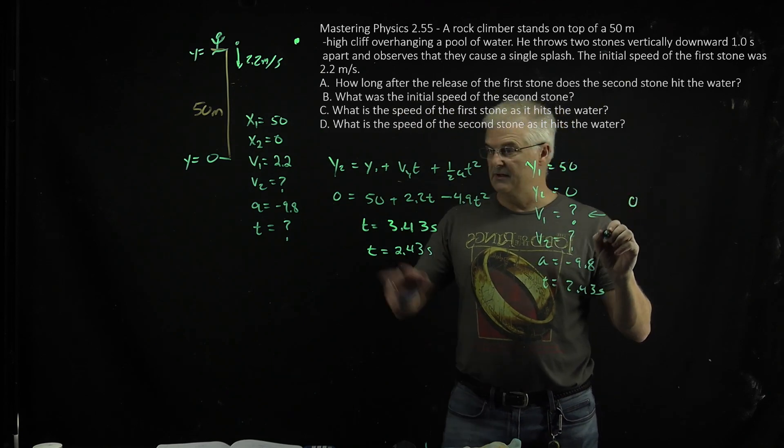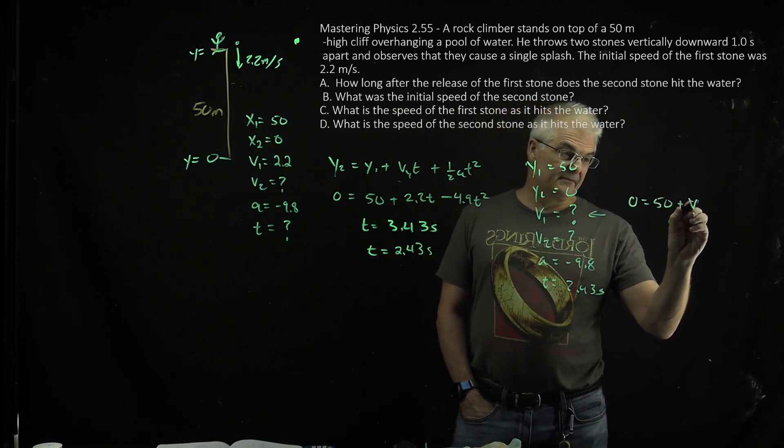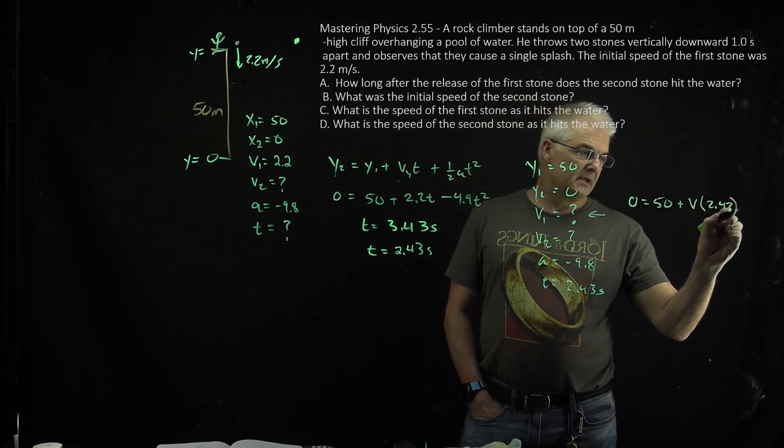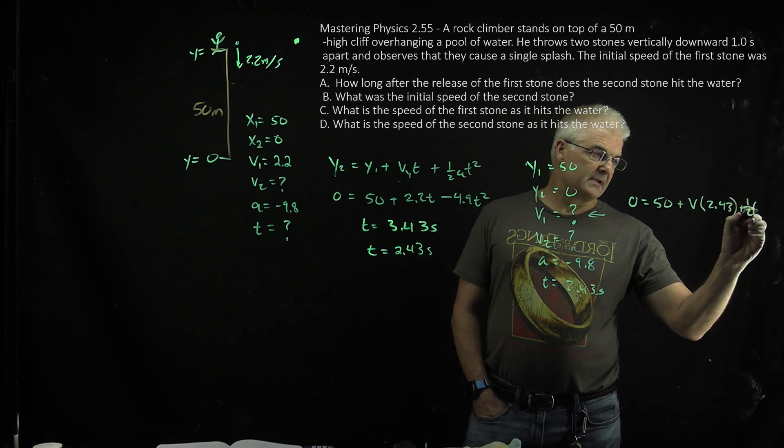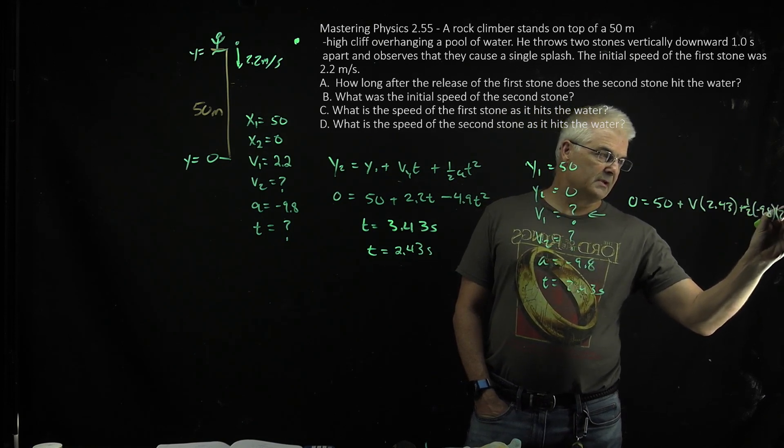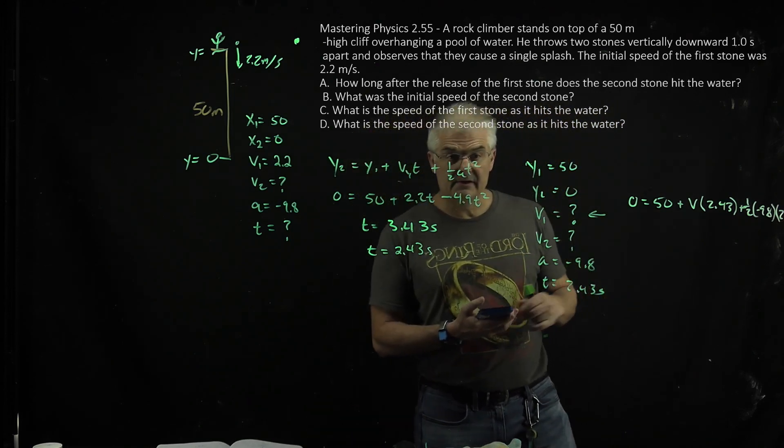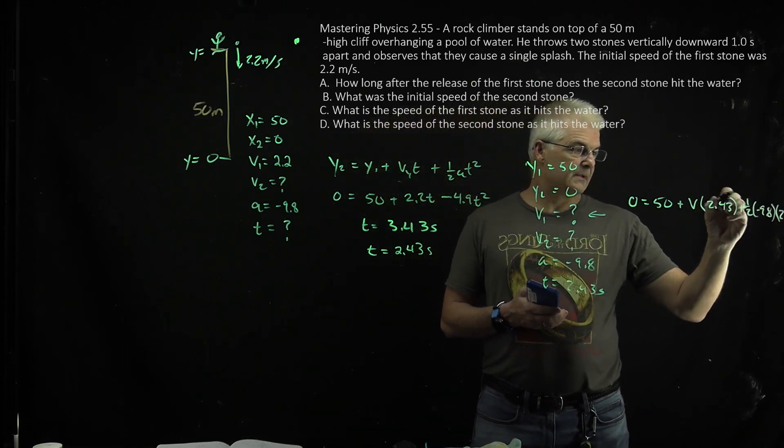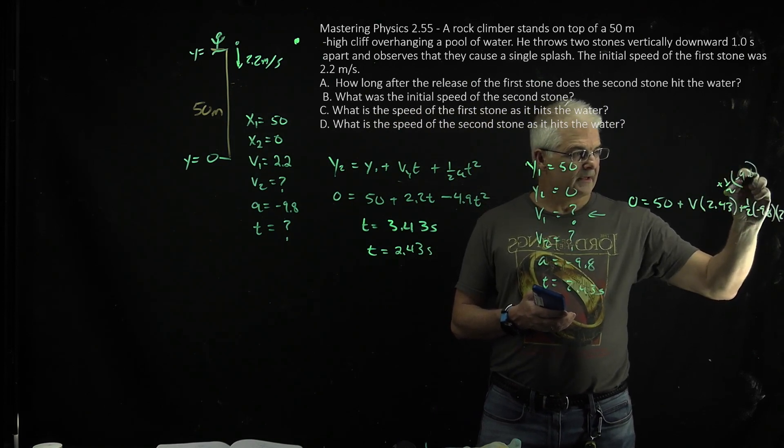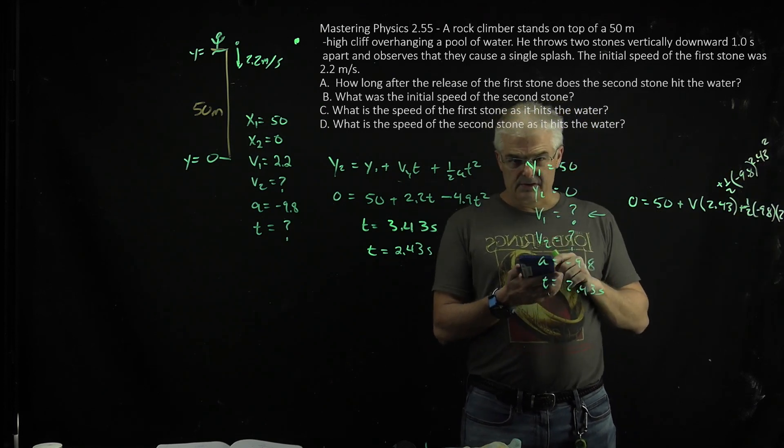And then I'll say 0, using this equation here, equals 50 plus v, now we know what t is, 2.43 plus 1 half times negative 9.8 times 2.43 squared. And I get on my calculator, that's off the screen, plus 1 half times negative 9.8 times 2.43 squared.